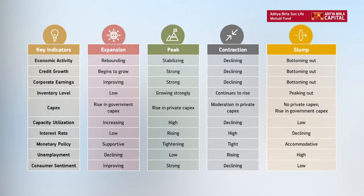Employment is doing extremely well, credit growth is quite high — these are signs of a typical overheated economy. When growth starts coming down, we call it a contraction phase where demand slows down and demand-related indicators show weakness. Eventually it leads into a slump phase where all hell breaks loose — employment is declining, industrial production is declining, bad assets are rising for the banking sector. So different economic indicators tell us which phase of the economy we are in.